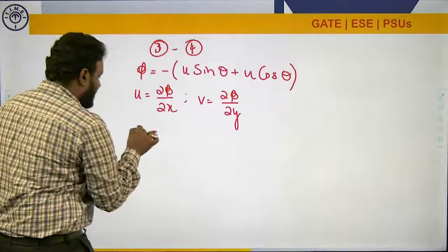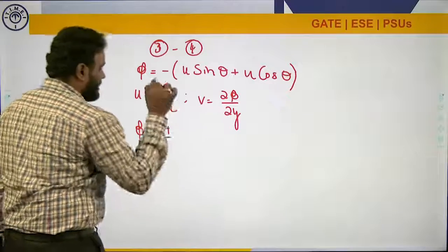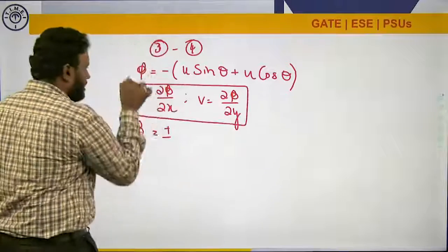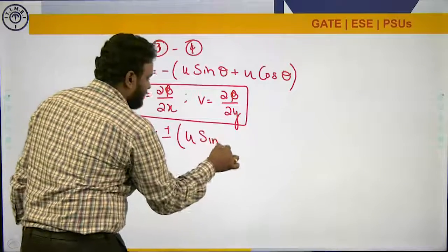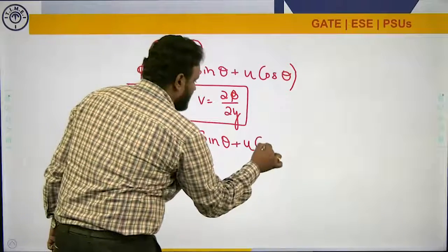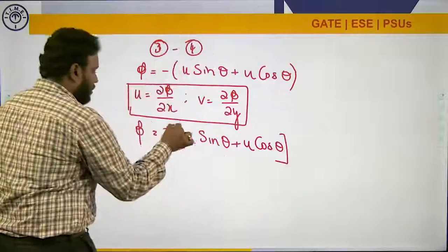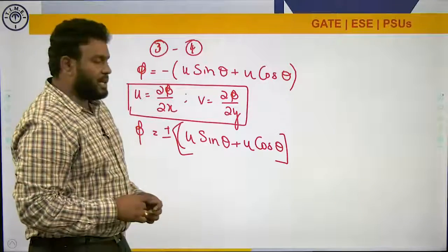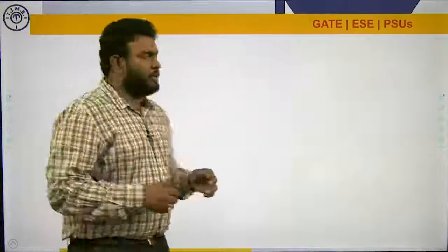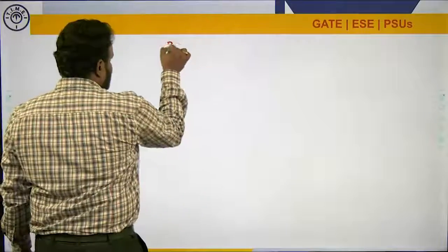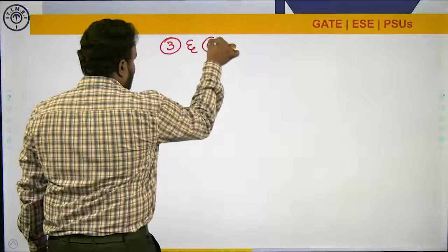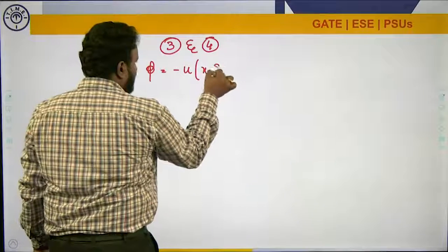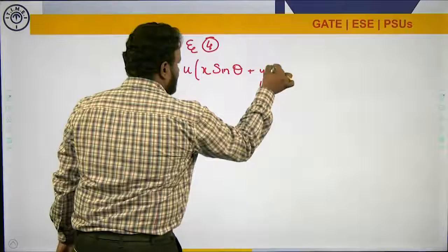From the options given in the question, since the negative orientation is not taken in some definitions of the velocity potential function, phi can be written as plus or minus. By solving equations 3 and 4, the final result is φ = −u(x sinθ + y cosθ).